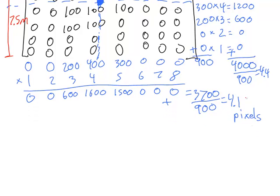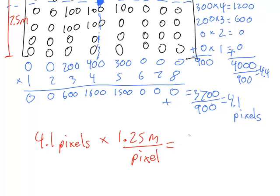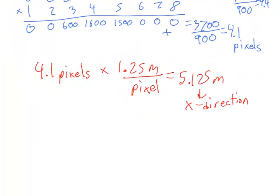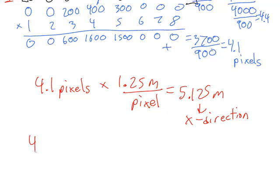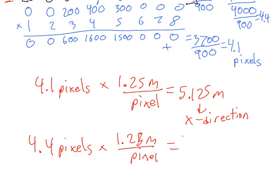We can now use our meter per pixel number to convert the center location of the object from units of pixels into units of meters. For example, we know that the center of the object in the x direction is at 4.1 pixels. If I now multiply that by the conversion factor of 1.25 meters per pixel, I find out that the location of the object in the x direction is 5.125 meters in the x direction. I can do the same thing to find the y position of the object. I take 4.4 pixels and convert that with the value 1.25 meters per pixel. And I find that the y position of the object is 5.55 meters in the y direction.